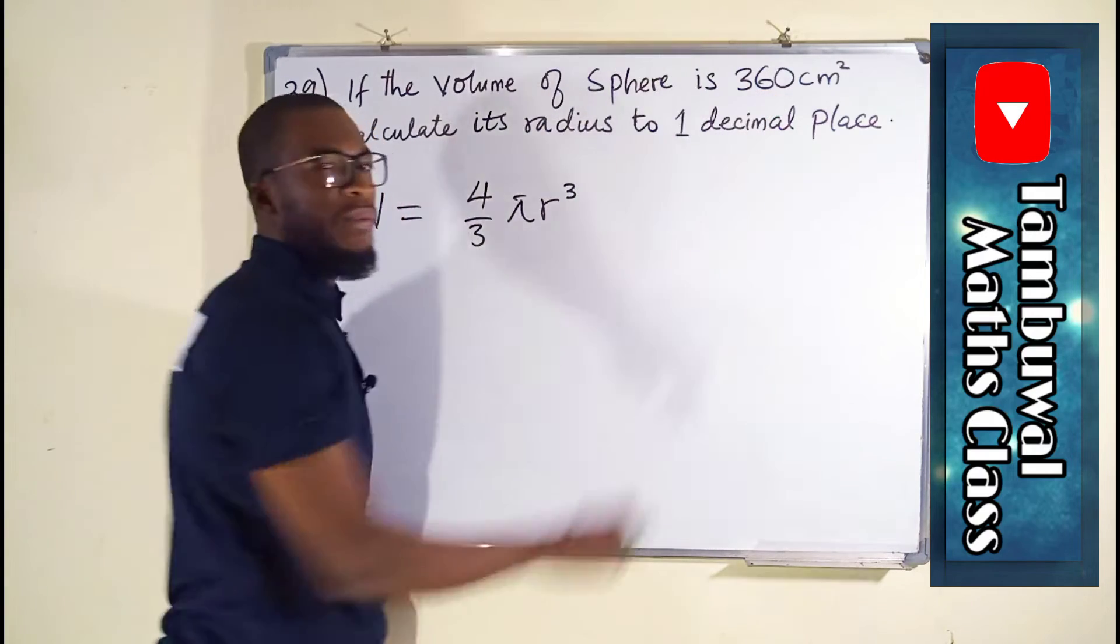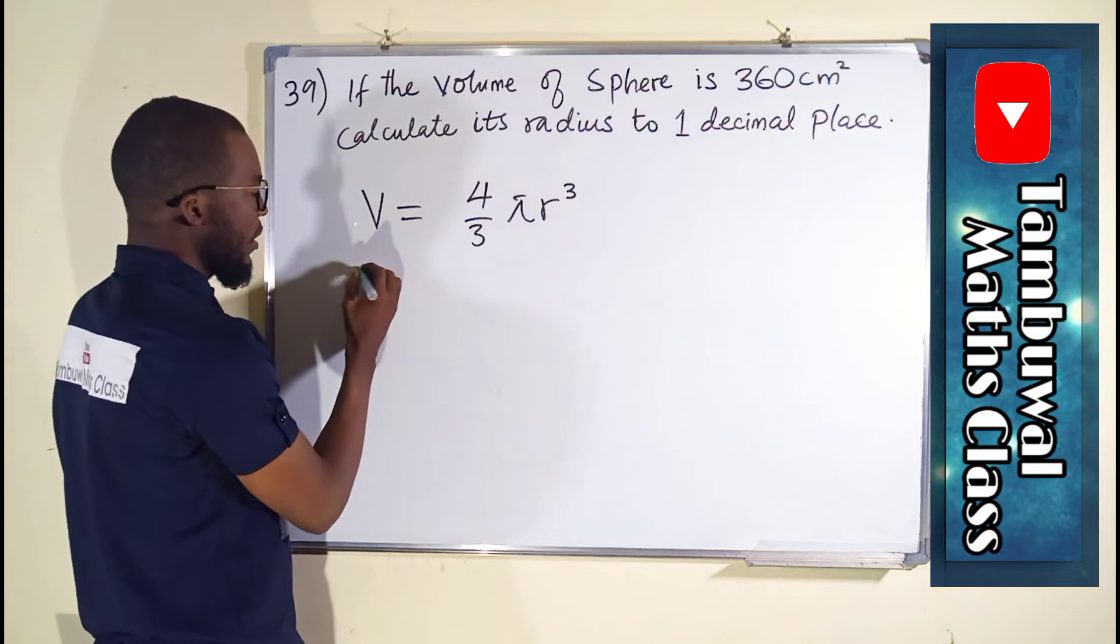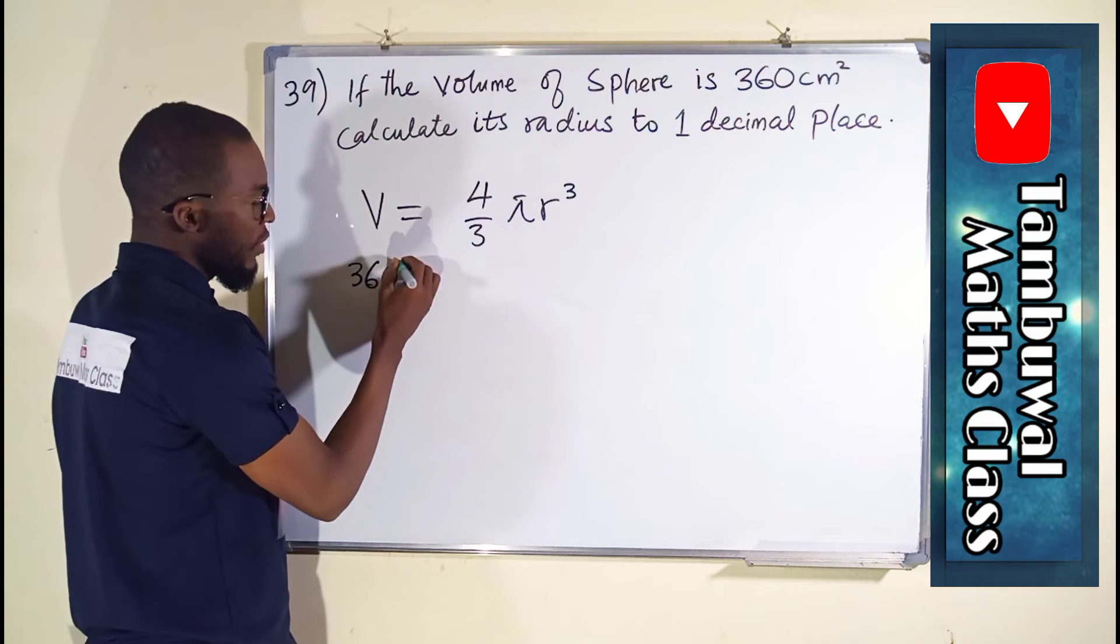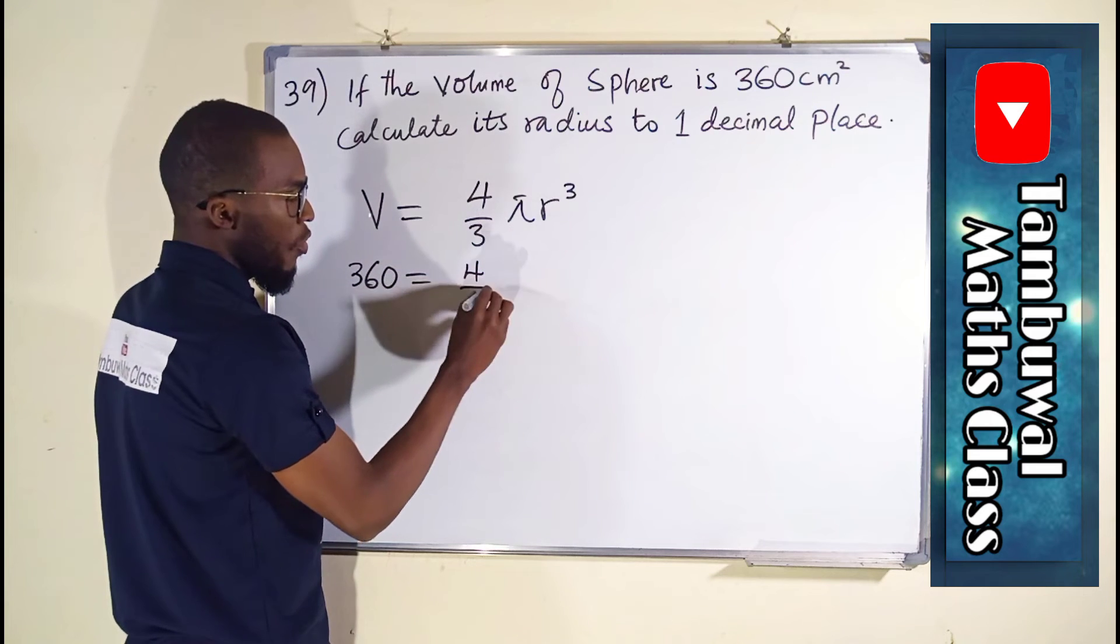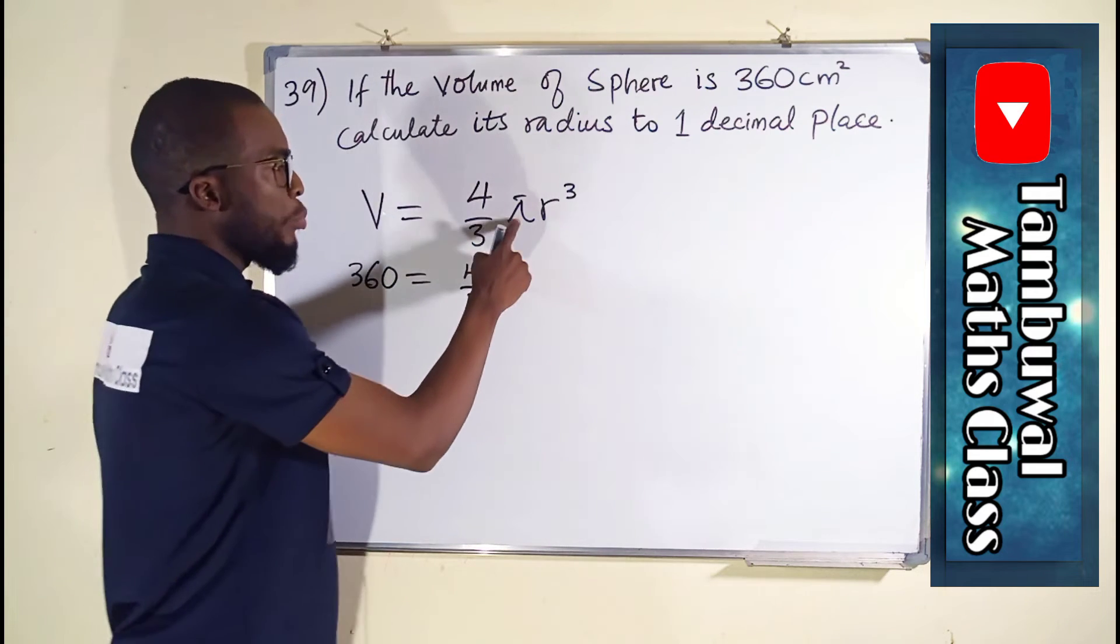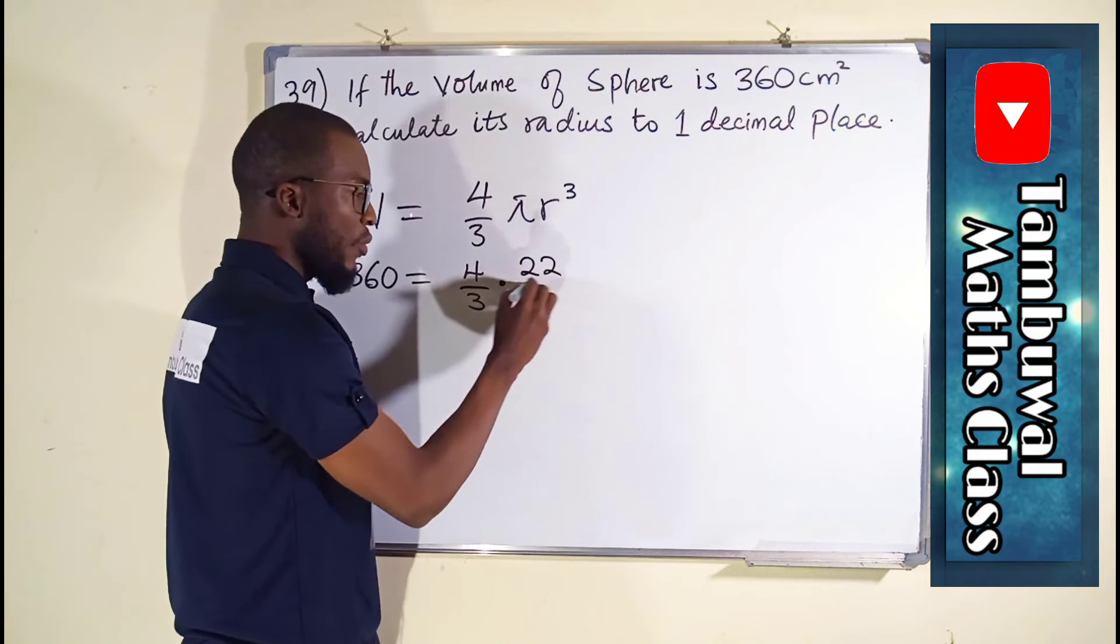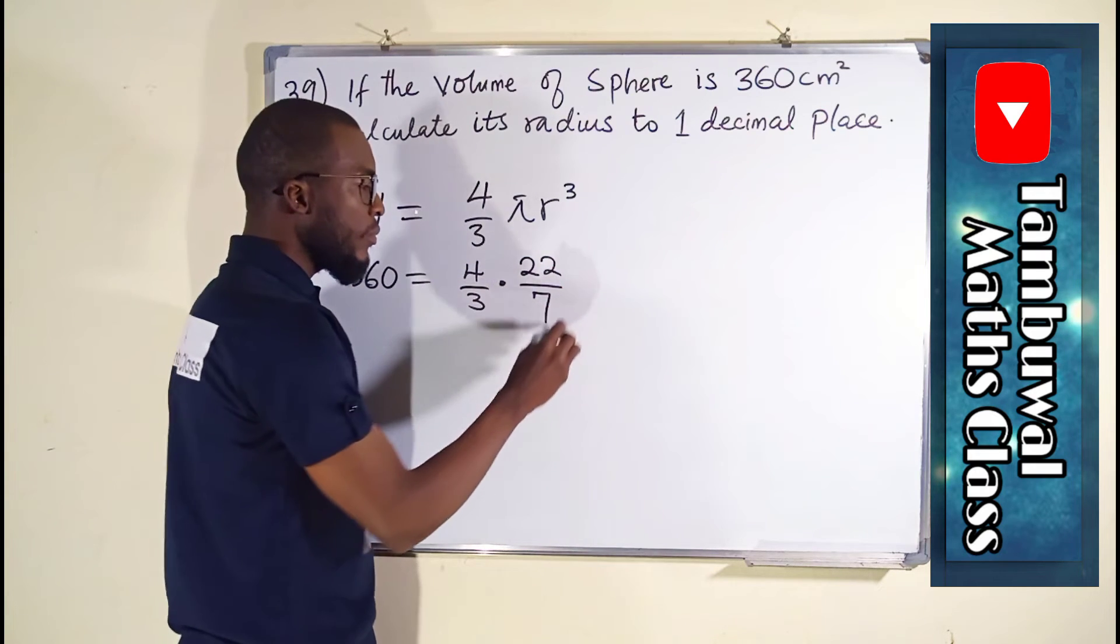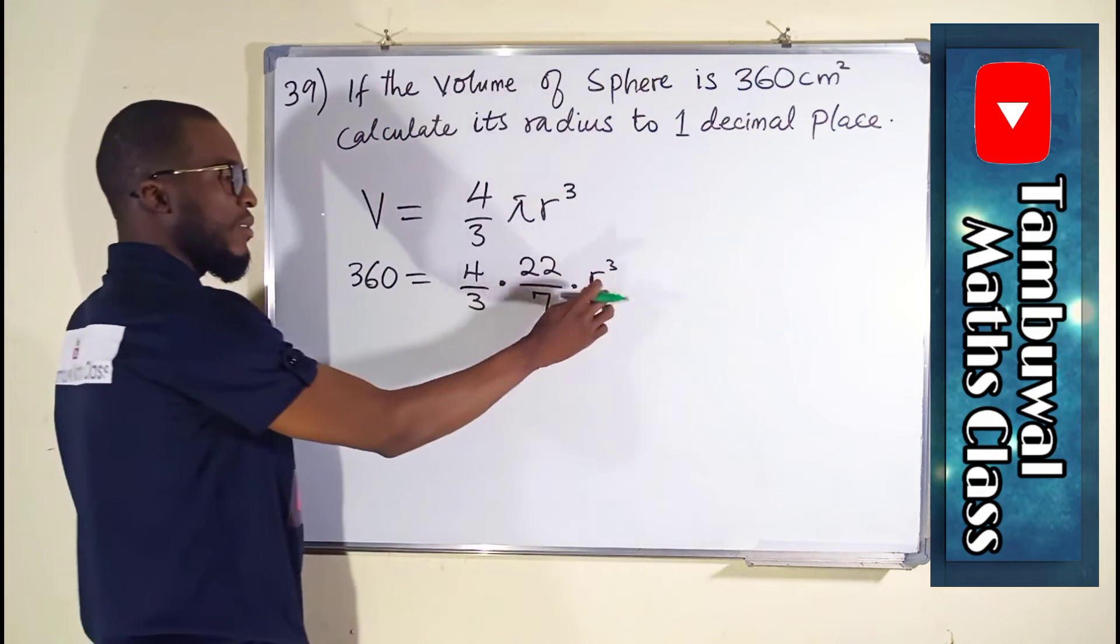The volume is already given from the question, so we substitute it: 360 = 4/3 × π × r³. Since pi is not given, we can use 22/7. We're looking for r³, that's our main target.